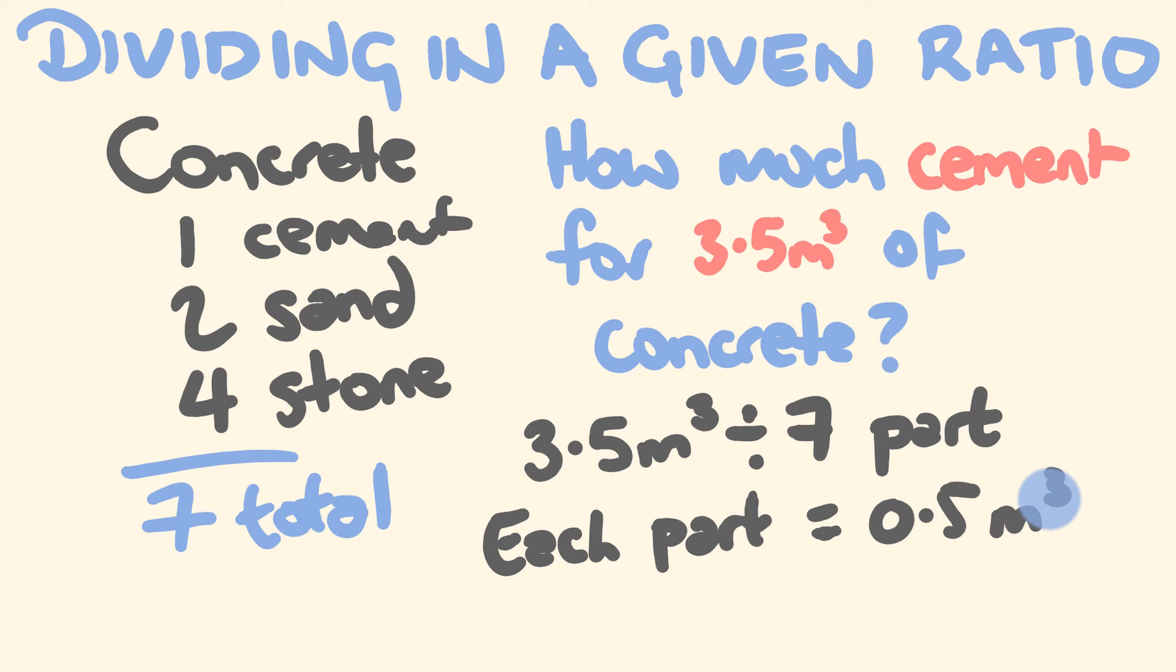So how much cement are we going to need? We need one part here, so each part is 0.5, we're going to be using 0.5 metres cubed. We could work out the sand as well. We're going to use two parts. Two lots of half a metre, so a metre cubed. For the stone, we're going to be using four parts. 4 times 0.5 is 2 metres cubed. And you can see this adds up to 3.5 metres of concrete that we're making.